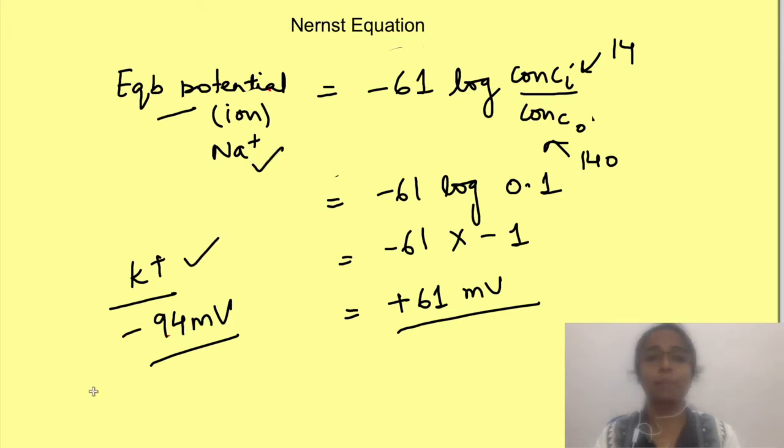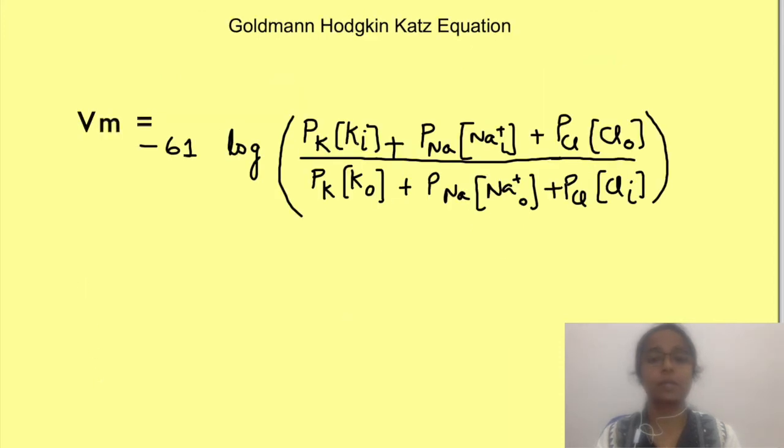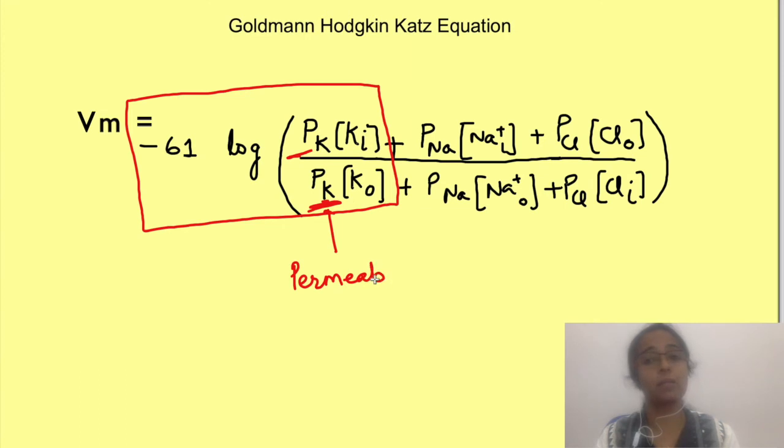So RMP cannot be determined by Nernst equation if we consider more than one ion. Instead for that we use Goldman-Hodgkin-Katz equation. Now GHK equation is something like this. Don't get afraid by looking at the equation. In a minute I will simplify it for you. See this equation is simply an extension of Nernst equation. This portion if you see, isn't it same as Nernst equation? But here in this equation permeability of the membrane is also included.